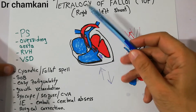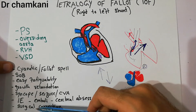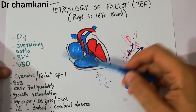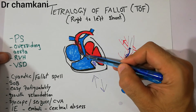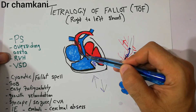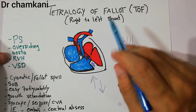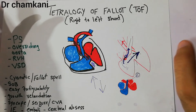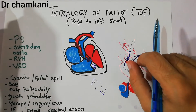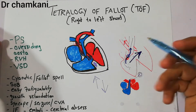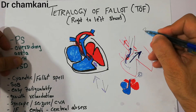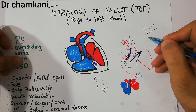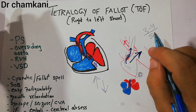Tetralogy of Fallot can be corrected with surgery. Surgical correction addresses all these problems — the pulmonary stenosis can be corrected, the VSD can be repaired, and the patient can improve significantly. Without surgery these patients may have a life expectancy of 3 to 4 years, but with surgery they can have a life expectancy of around 50 years.